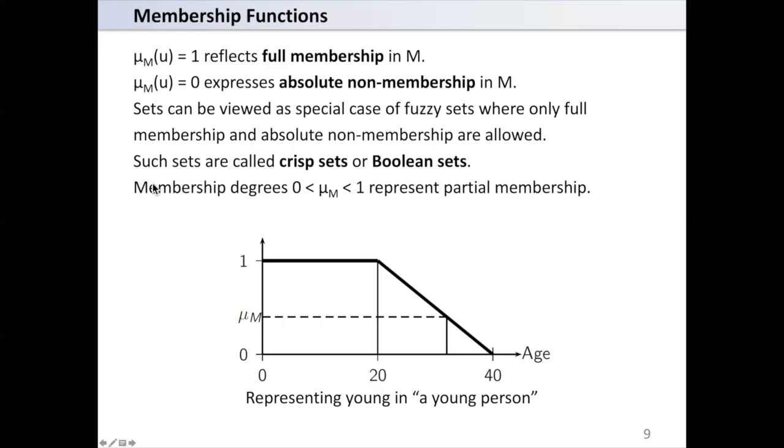However, membership degrees between 0 and 1 represent partial membership. Consider the set representing young in young person. Here, we have a region of the age which is between 0 and 20, the membership has value 1. And from 20 to 40, it has value between 1 and 0, decreasing from 1 to 0. And after that, after 40, the value is 0, membership is 0.